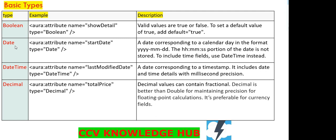The next one is Date. Date will support the format year-month-date. The syntax is: aura:attribute name equal to 'startDate', type equal to Date. If we want to use along with the time, we can use the next primitive data type, which is DateTime. The syntax is: aura:attribute name equal to 'lastModifiedDate', type equal to DateTime.